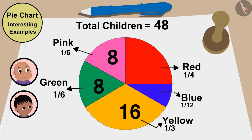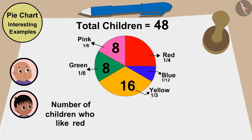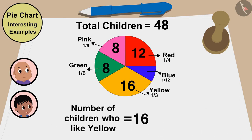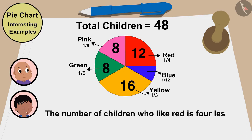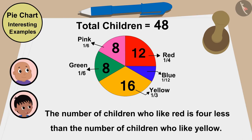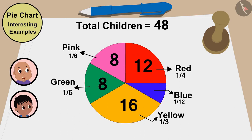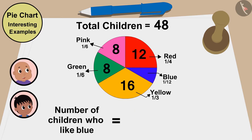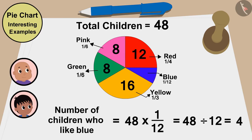Bablu, the share of children who like red is quite large but a little smaller than those who like yellow. The number of children who like red will be 48 times one fourth, or 48 divided by 4, which is 12 children. Yellow color is liked by 16 children, meaning the number who like red is 4 less than yellow. I like blue color a lot, but in this pie chart the share of blue is the smallest. The number of children who like blue is 48 times one twelfth, or 48 divided by 12 — that is, 4. Out of whom, I am 1.